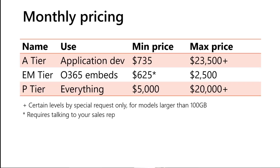Here is a rough guide to pricing. For the A-tier, you can start at roughly $735 per month, pay per minute, and scale up to $23,500 per month or more. With the EM-tier, you can get the EM-3 level for about $2,500 a month, with lower levels starting around $625 per month when it first came out. Finally, with the P-tier, you can get levels P-1 through P-3 for $5,000 to $20,000 per month, or bigger with Microsoft's approval.